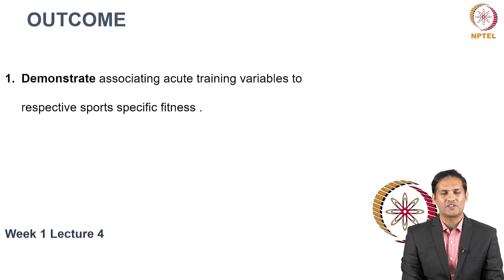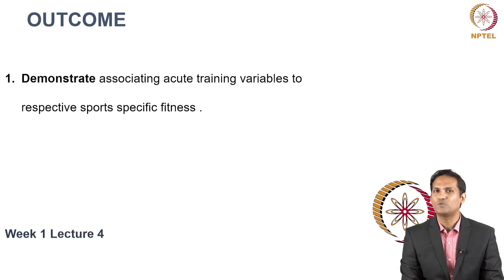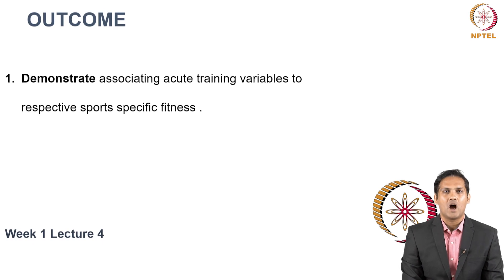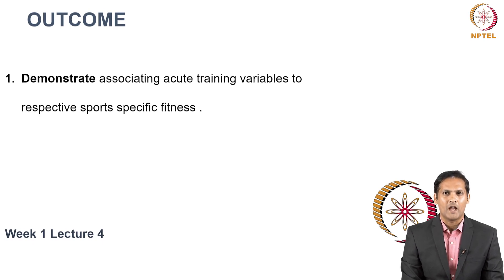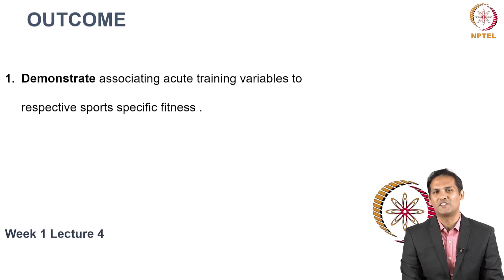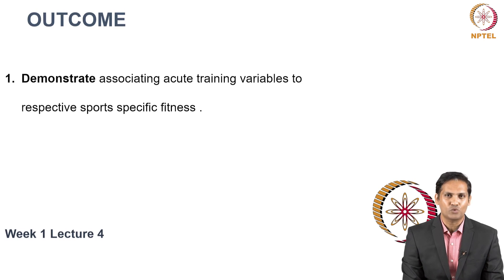The outcome of this lecture is you should be able to demonstrate how you connect acute training variables with respect to sports specific fitness variables. That means how do you write intensity for power, how do you write intensity for speed, how do you write intensity for conditioning, and how do you express the volume of each and every sports specific fitness variable. You should be able to demonstrate these skills at the end of this lecture.